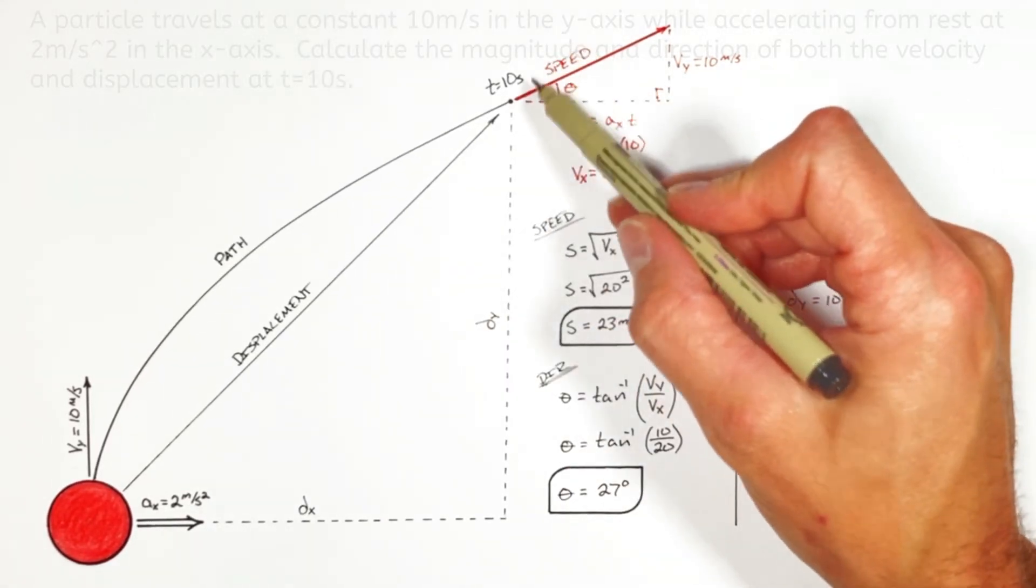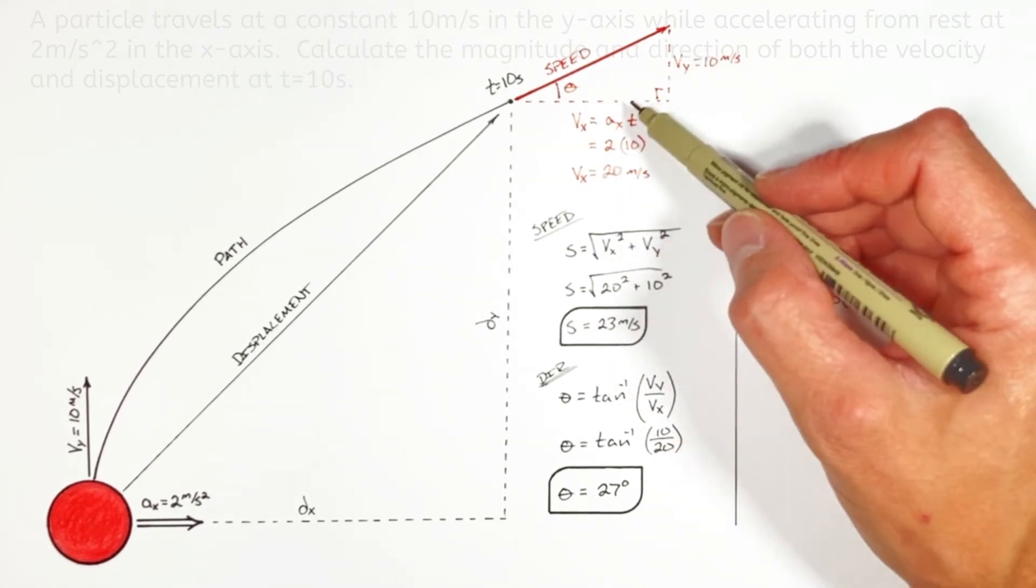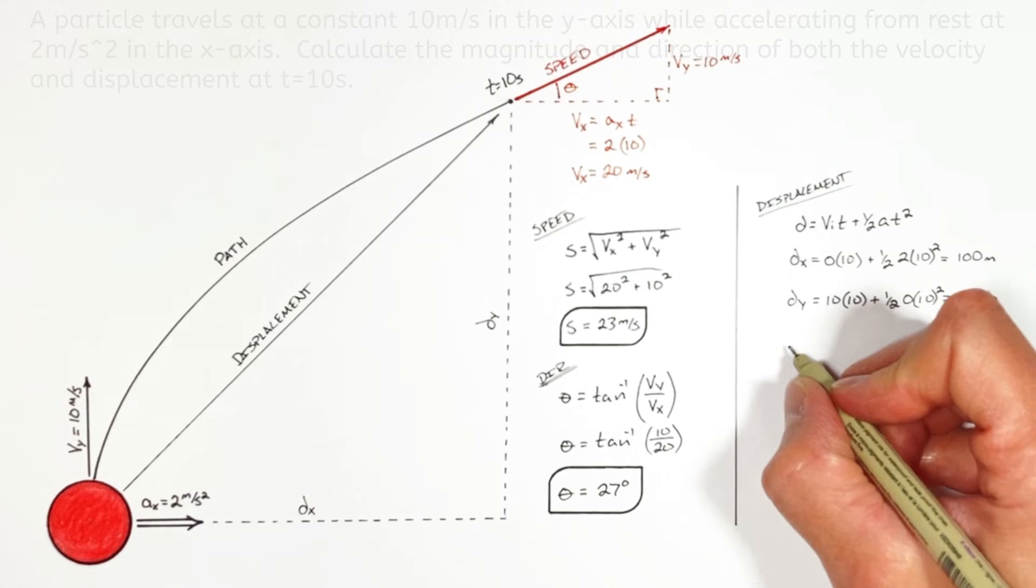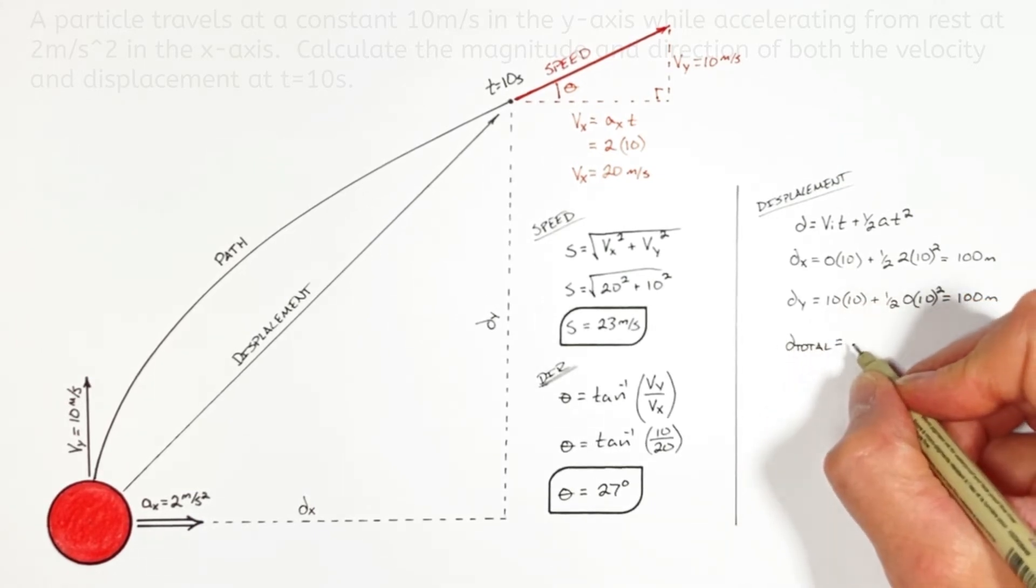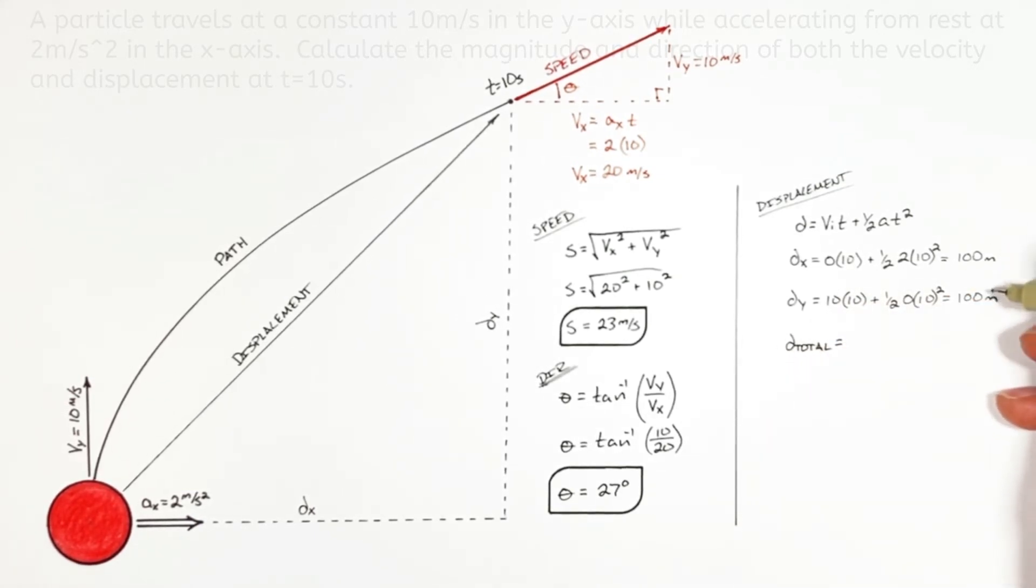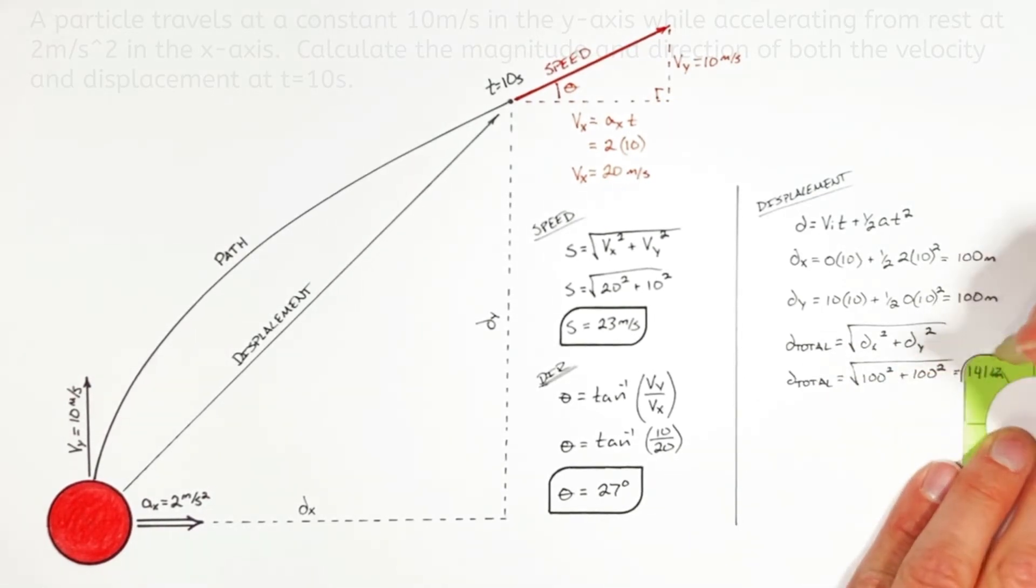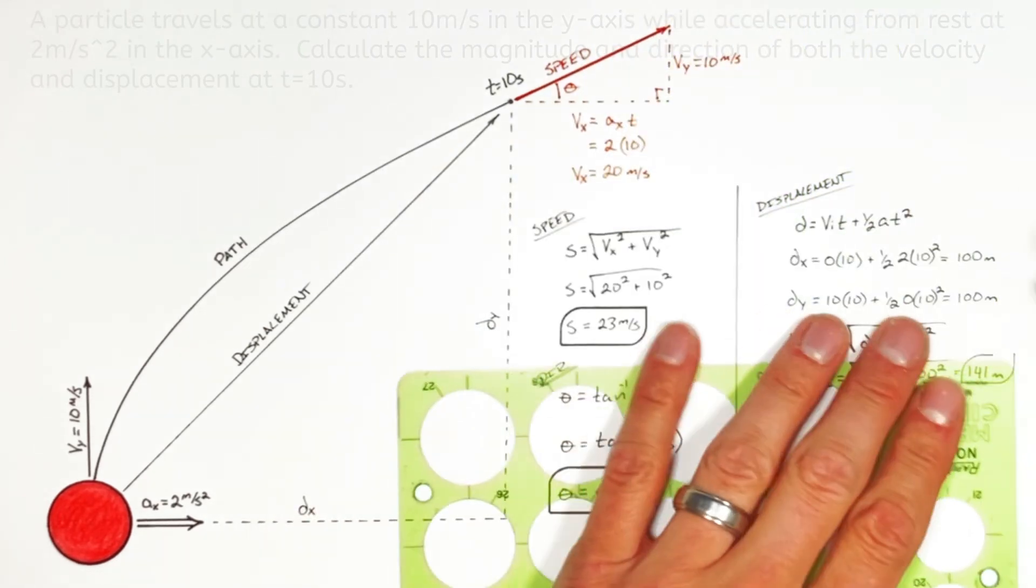So just like we found the magnitude of speed using the components of the velocity vector and the Pythagorean theorem, we can solve for the total displacement using the components of displacement and the Pythagorean theorem. And we find the total displacement is 141 meters.